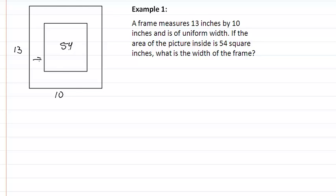We are looking for the distance here, going all the way around basically. So we are going to have 13 minus 2X and 10 minus 2X, because we are taking off when we are looking for the smaller dimension. So we have 10 minus 2X times 13 minus 2X equals 54, because this right here is the dimensions for the inside part, for our actual picture.